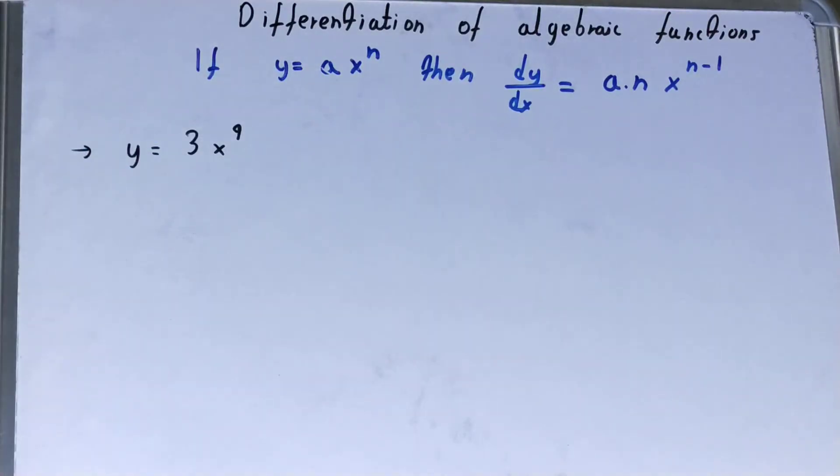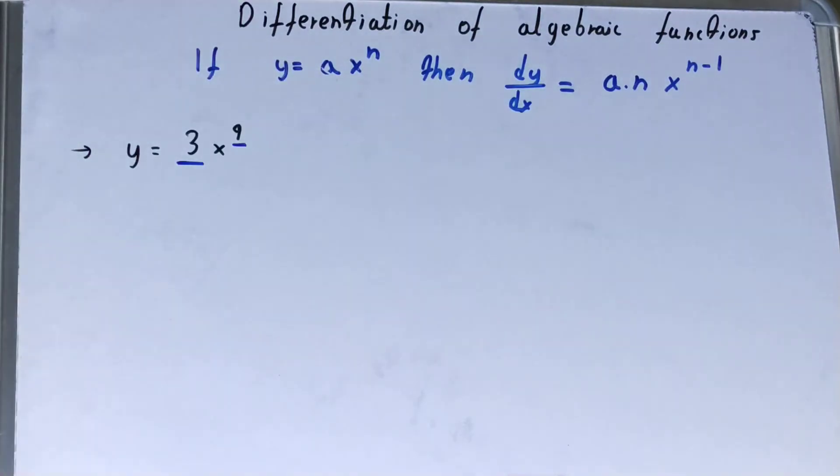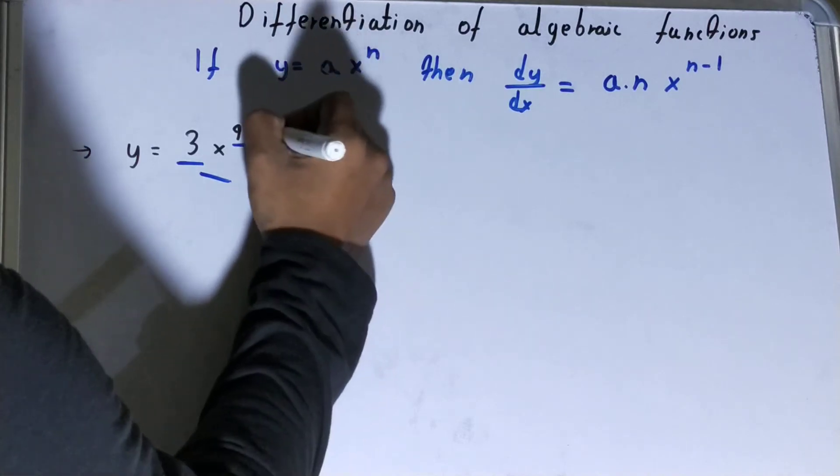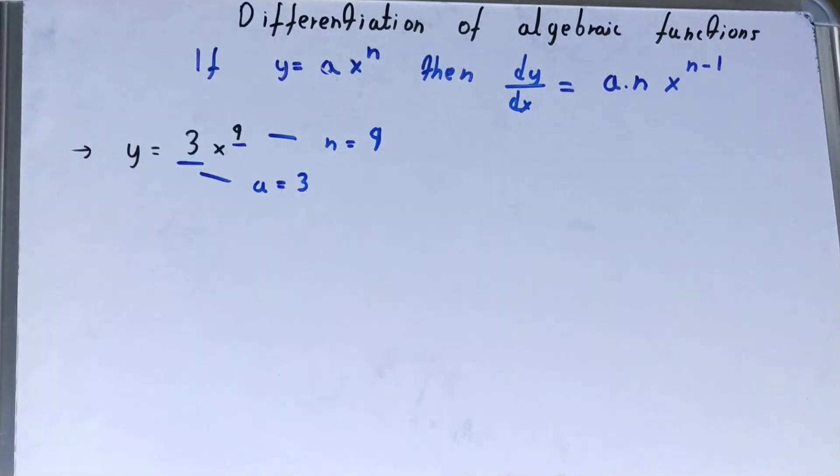So what is our a and what is our n? Here a is 3 and n is 9. This is very important when you are dealing with differentiation—you should know what is your a, what are your constants, what are your coefficients, what are your powers.